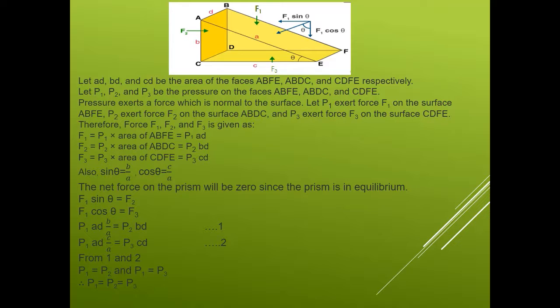So the net force on the prism will be zero since the prism is in equilibrium. So we can write: F1 sin theta equals F2, and F1 cos theta equals F3. Here we are equating the forces which are acting along the same direction. We are comparing the vertical forces and the horizontal forces. F1 sin theta is the horizontal force and F1 cos theta is the vertical force.